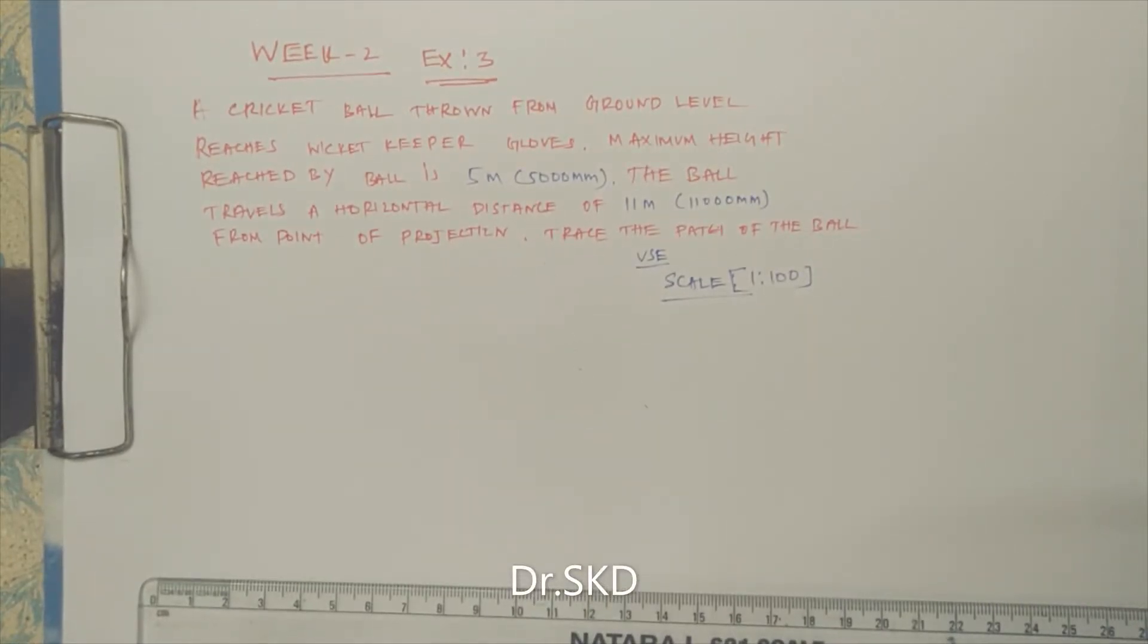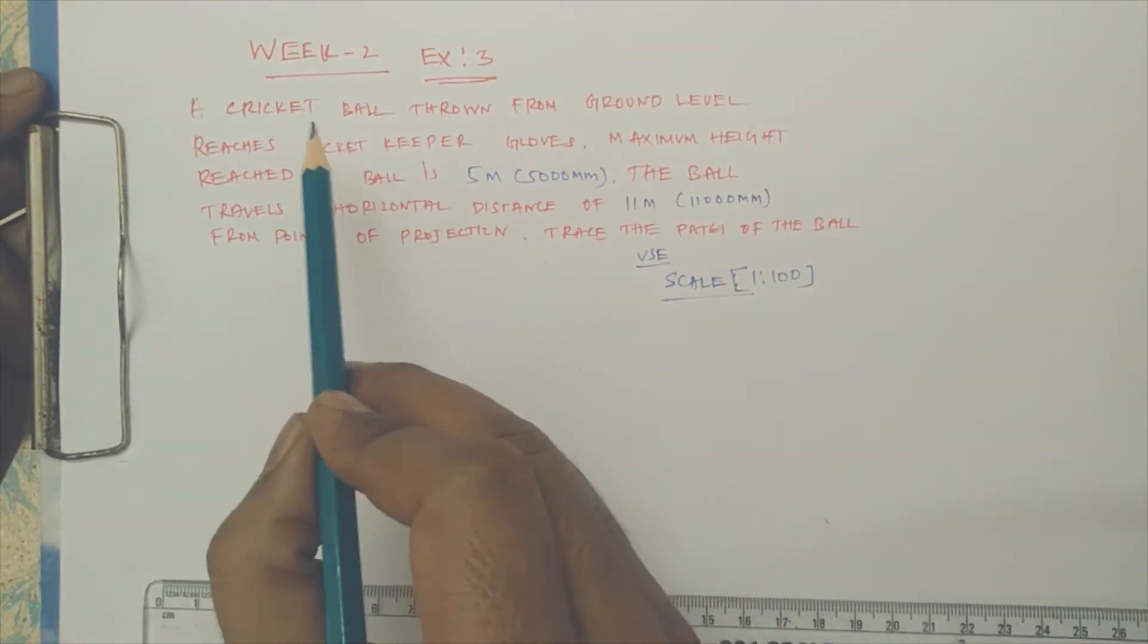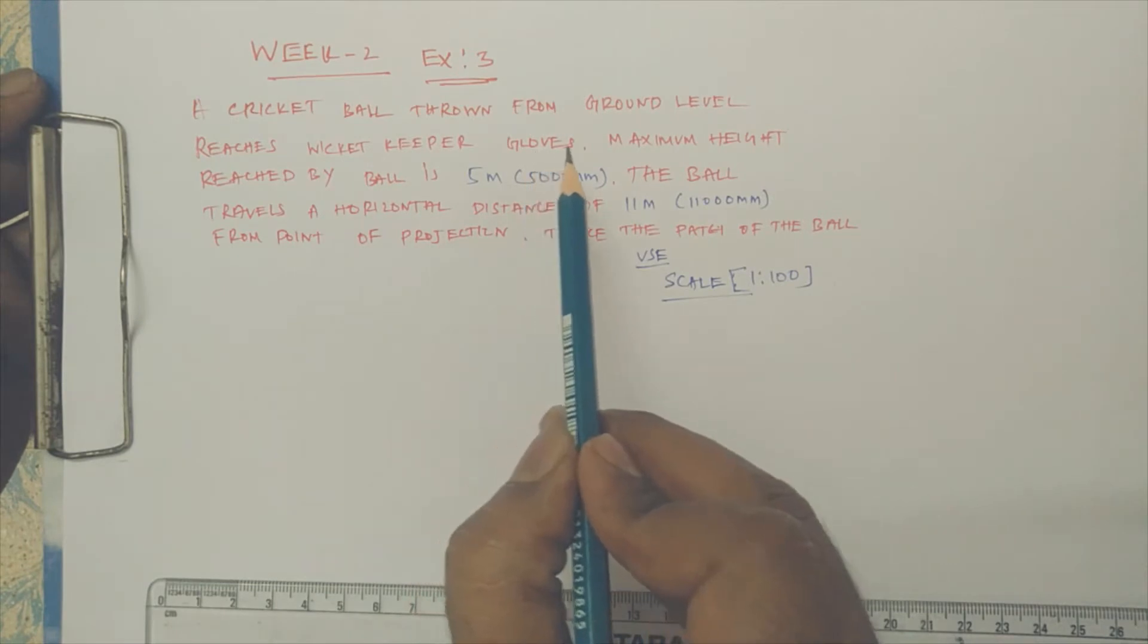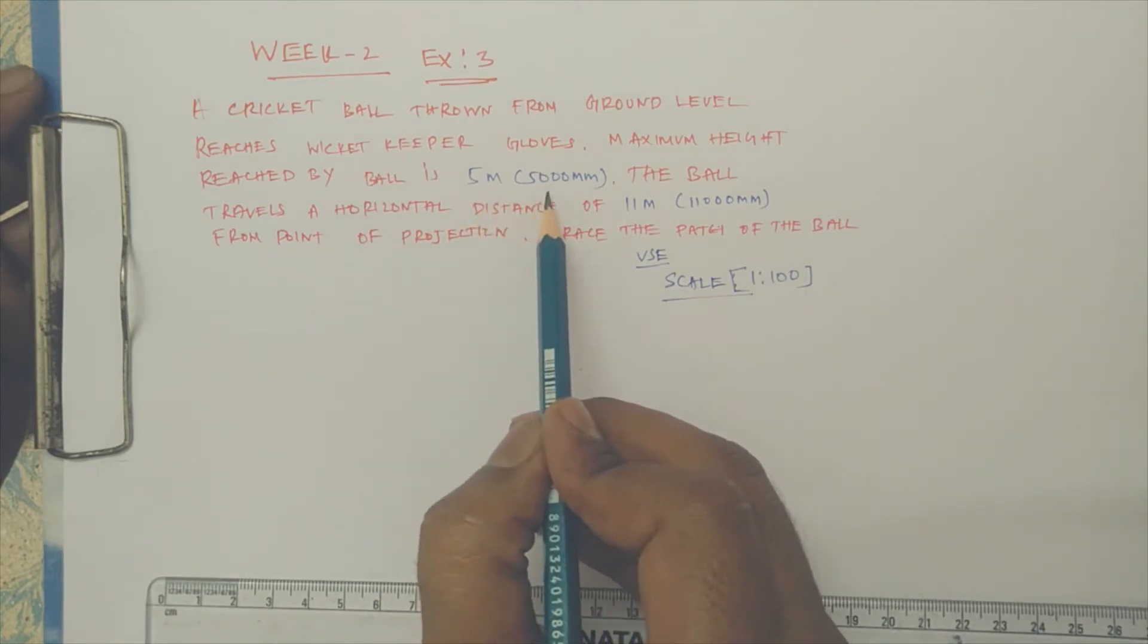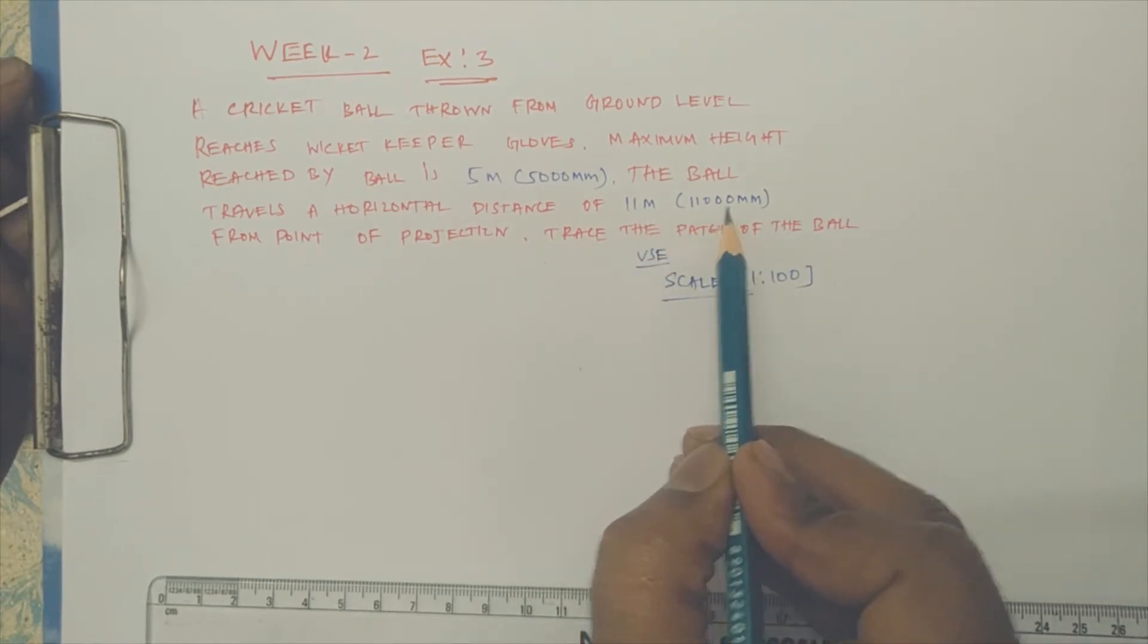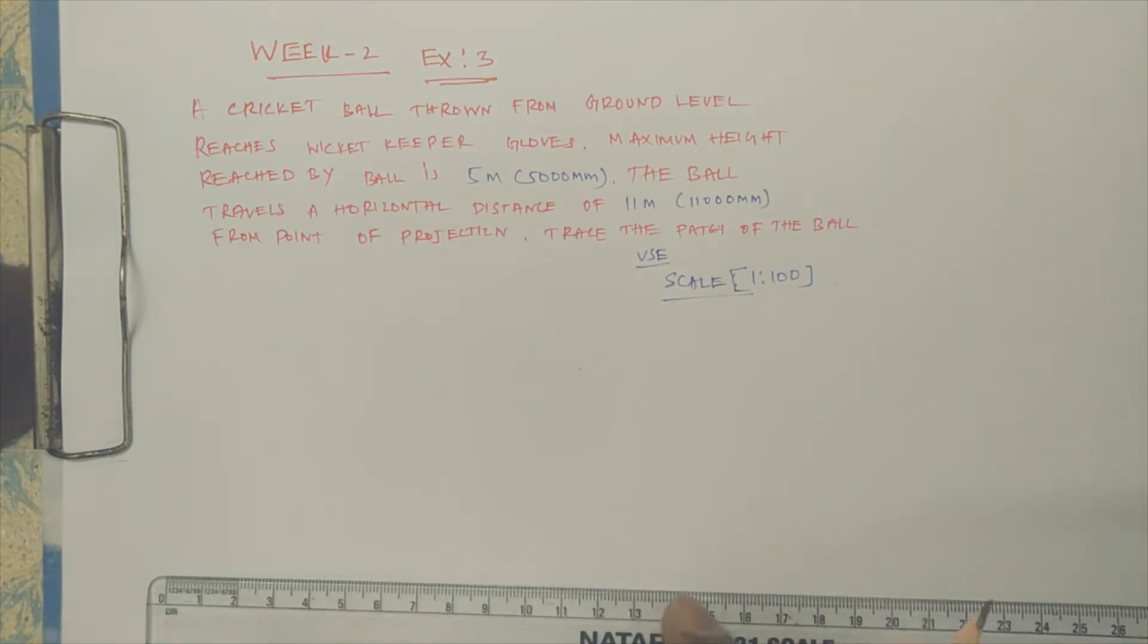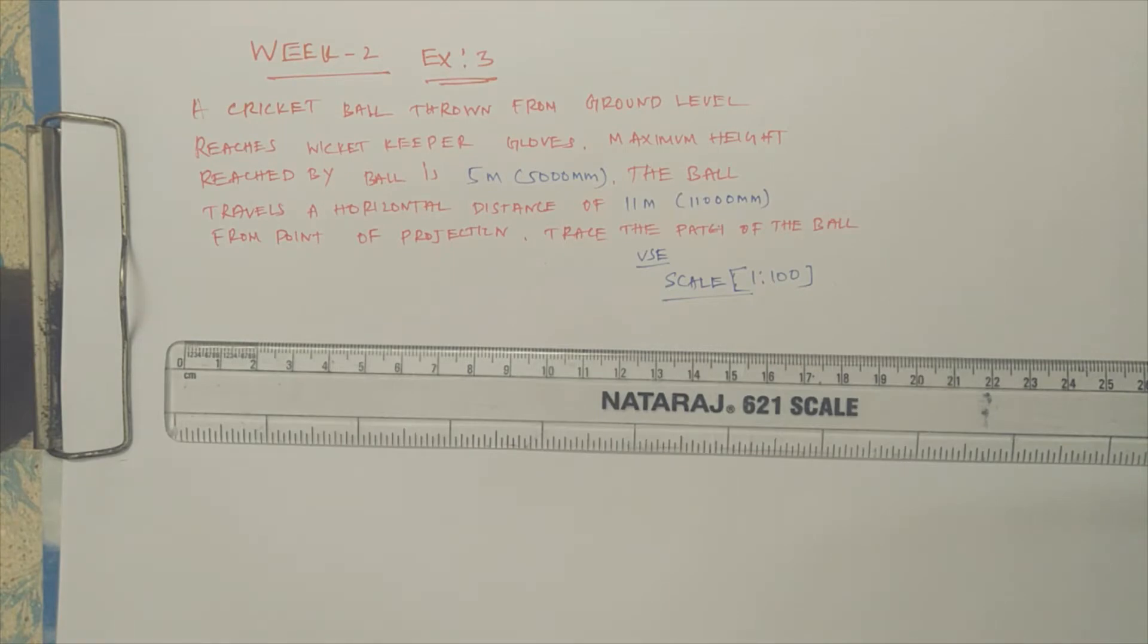Welcome students, today we'll see week number two, exercise number three. The question is: a cricket ball thrown from ground level reaches the wicket keeper's gloves. The maximum height reached by the ball is 5 meters (5000 mm). The ball travels a horizontal distance of 11 meters (11,000 mm) from the point of projection. Trace the path of the ball.